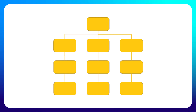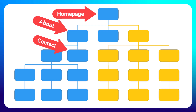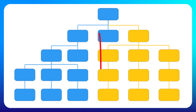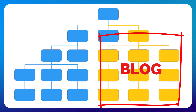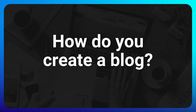For example, with my site markbrinker.com, I use this structure: I have standard web pages like a home page, about page, contact us page, and services page. But I also have a blog as part of my overall website with dozens of blog posts on all kinds of topics relating to website design, digital marketing, etc. So the next question is, how do you actually create a blog so you have a place to publish blog posts and share your content with the world?